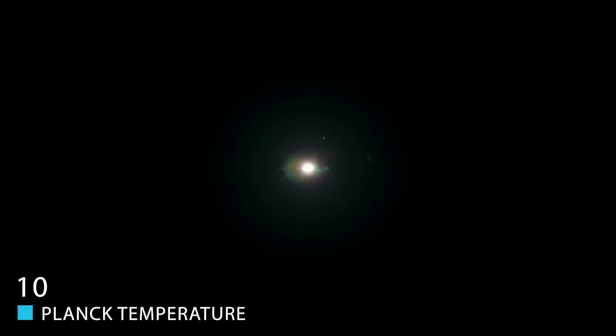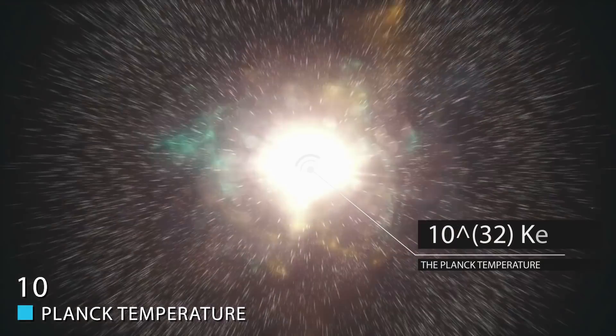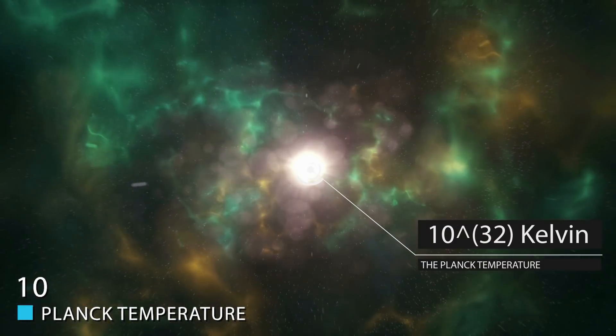The highest possible theoretical temperature ever is the Planck temperature, which is 10 to the power of 32 Kelvin. It was the temperature of the universe 10 to the power of minus 43 seconds after the moment of the Big Bang.